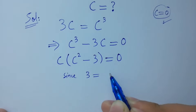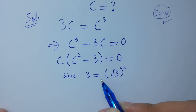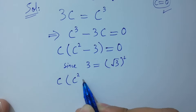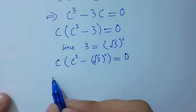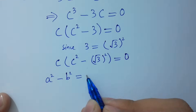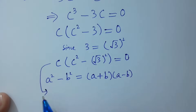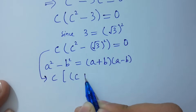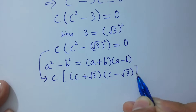Since 3 equals the square of √3, we can write c squared minus (√3) squared. Applying the difference of squares formula — a squared minus b squared equals (a plus b)(a minus b) — it becomes c times (c plus √3) times (c minus √3) equal to 0.